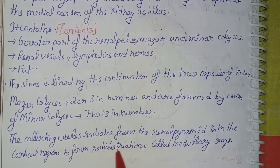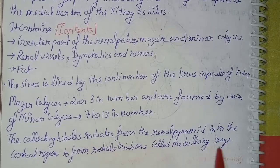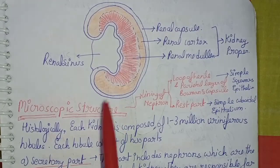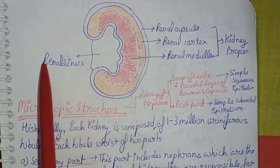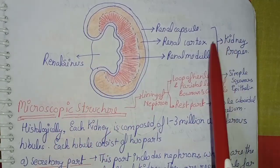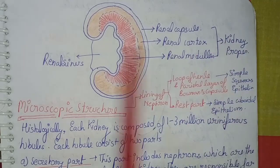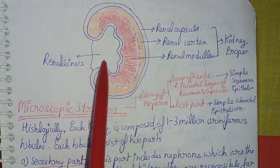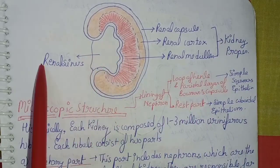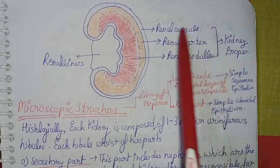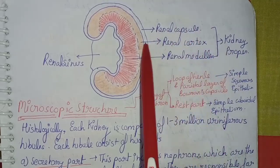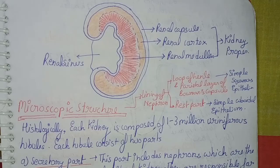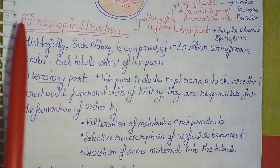The sinus is lined by a continuation of the true capsule of the kidney. The major calyces are 2 or 3 in number, formed by the union of minor calyces. The minor calyces are 7 to 13 in number. Collecting tubules radiate from the renal pyramids into the cortical region to form radial stations called medullary rays. The renal sinus and the kidney proper together constitute the macroscopic structure of the kidney.